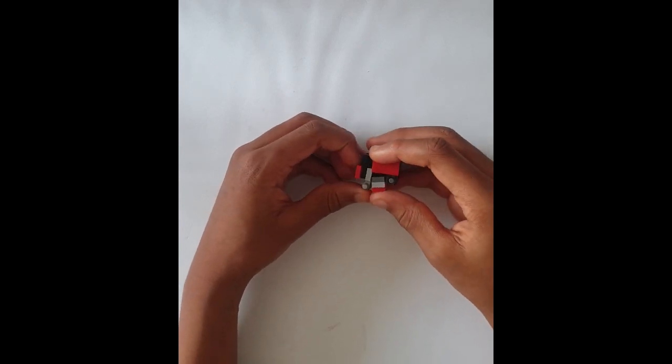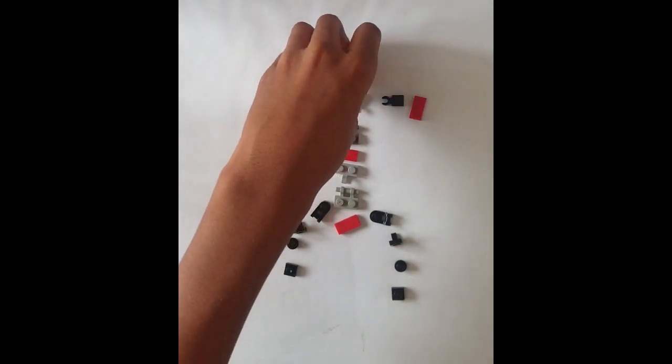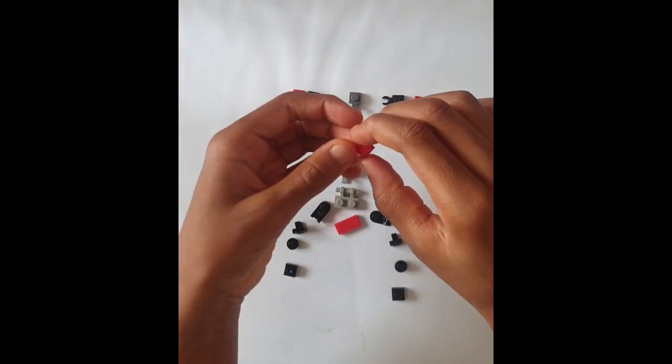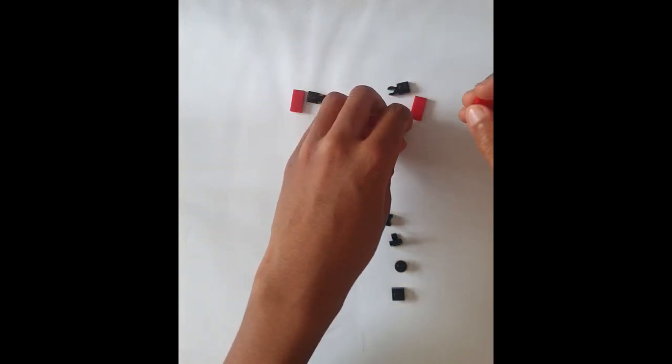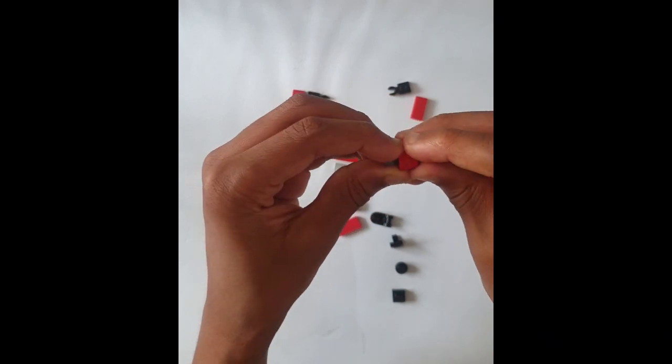So now I will make it. These are the pieces you will need to make the circle transformer. Get a 1x1 tile and put it on a 1x1 with a handle and put that on top.